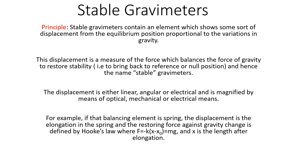To summarize, stable gravimeters contain an element which shows very small displacement, and these small displacements are magnified by electrical, mechanical, or optical means so that they can be detected. There is a restoring force which tends to bring the whole instrument back to its reference or null position — that is, the stability of the instrument is restored — and so these gravimeters are referred to as stable gravimeters. In the next slides we'll see how different stable gravimeters follow this principle.